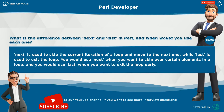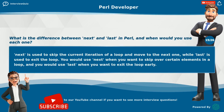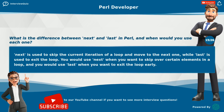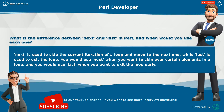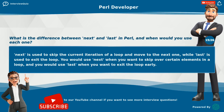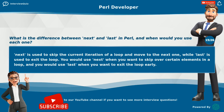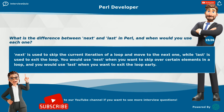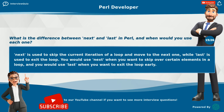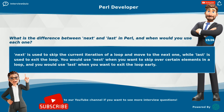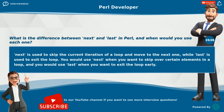What is the difference between next and last in Perl, and when would you use each one? next is used to skip the current iteration of a loop and move to the next one, while last is used to exit the loop. You would use next when you want to skip over certain elements, and last when you want to exit the loop early.